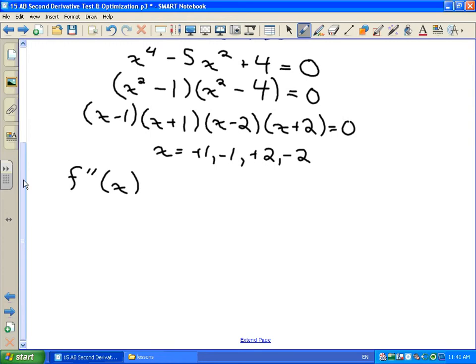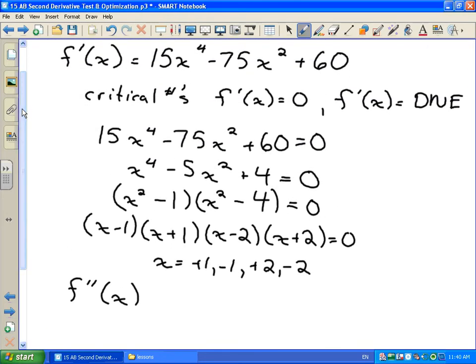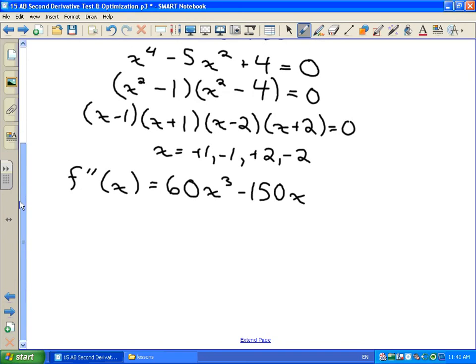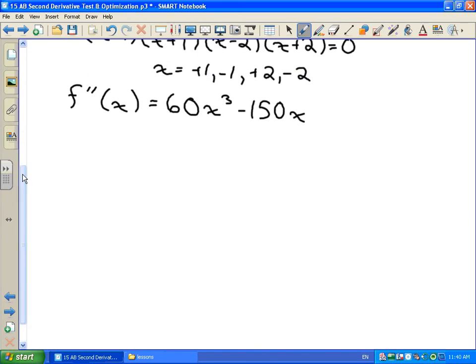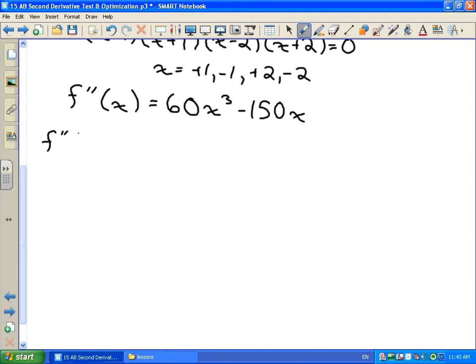So we'll go back to the derivative of our function, and we will take the second derivative here. So we've got 4 times 15 is going to give us 60x cubed minus 150x, and that's all we need. And what we want to do is evaluate f double-prime at each of those critical numbers. So we'll evaluate it at positive 1, negative 1, positive 2, and negative 2.